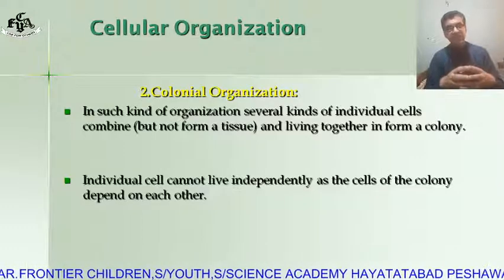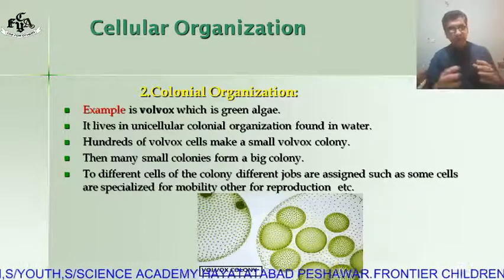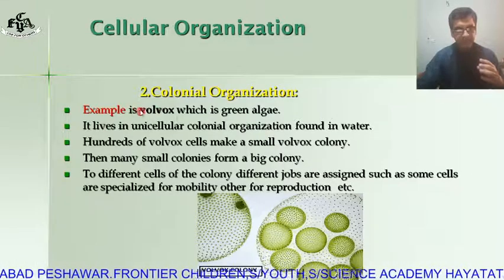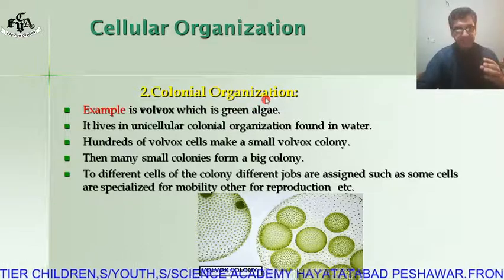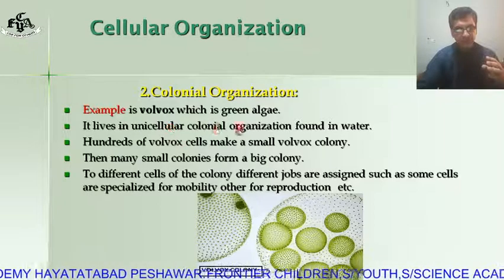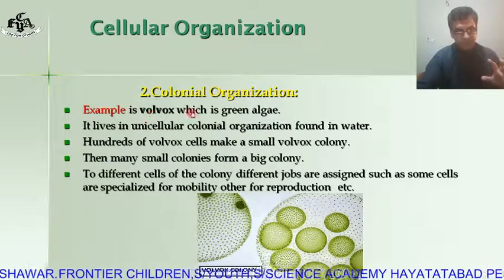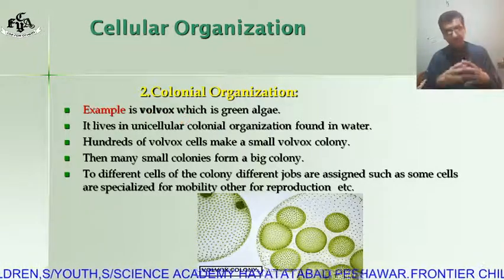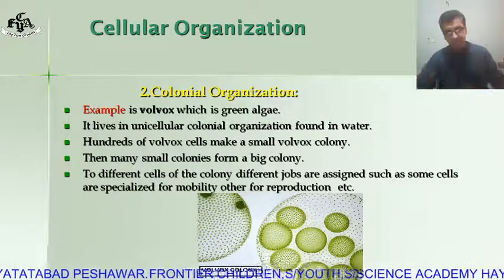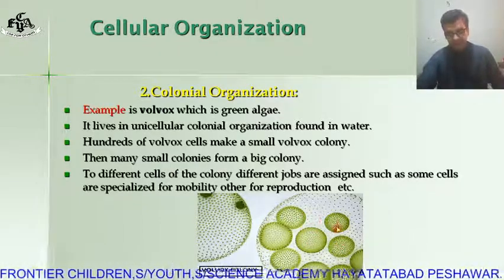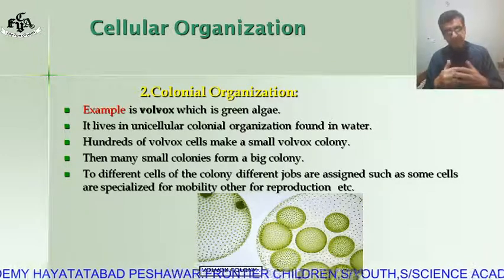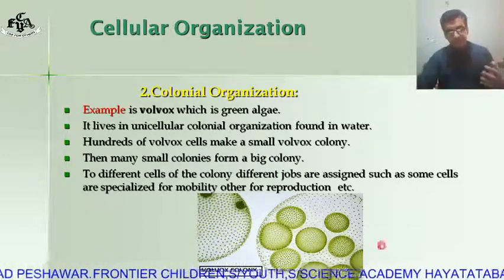If the cells of the colony separate from each other, they cannot survive, because the colony cells depend on each other for life. An example of colonial organization given in your book is Volvox, which is a green algae found in water and ponds. In this diagram, Volvox cells combine to form small colonies, and these small colonies combine to form bigger colonies.